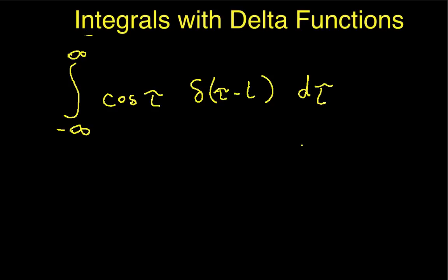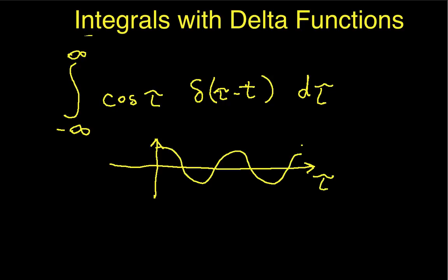What I really want here is delta of tau minus t. If I graph this as a function of tau — my dummy variable of integration — I've got cosine of tau as usual. I've got a delta function located at wherever t is. And I could change t, which would move the delta function to a different point. My limits go from minus infinity to infinity, so the only place where the delta function is not zero is where tau equals t. Basically, then, what we've got is cosine of t.